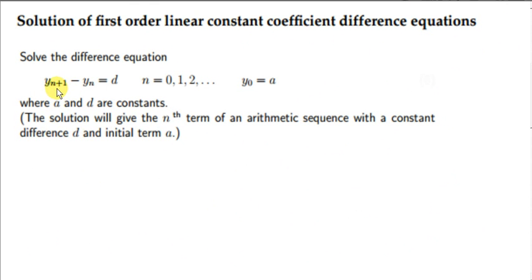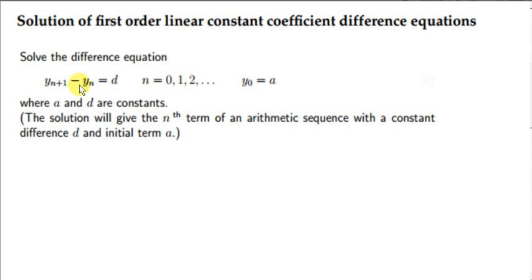Let's take another example. We want to solve the difference equation y(n+1) minus y(n) equals d, where d is some constant, and the initial value y₀ equals a, a constant. Notice that y(n+1) minus y(n) is the difference between consecutive terms in the sequence, and that difference is the constant d. So this sequence is an arithmetic sequence — one with a constant difference between consecutive terms. Without any z-transform, we could actually work this out quite easily.